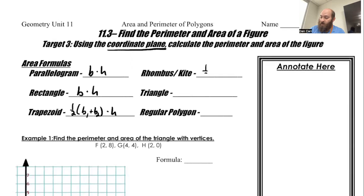A rhombus and a kite are one half of diagonal one times diagonal two. Triangle is one half of base times height. And a regular polygon is one half the apothem times perimeter.